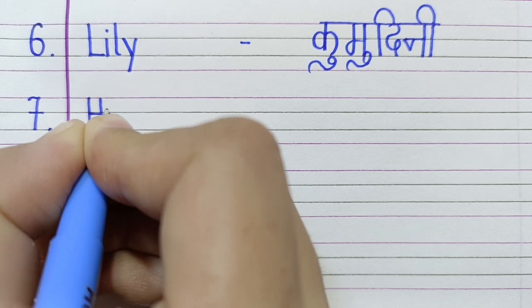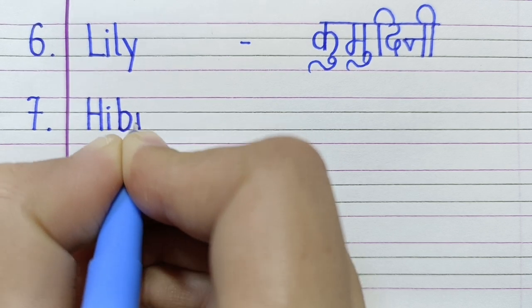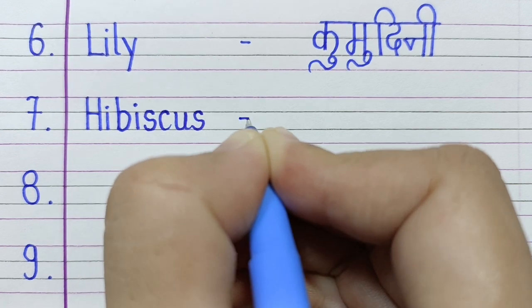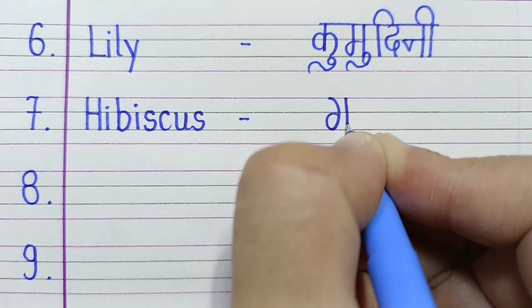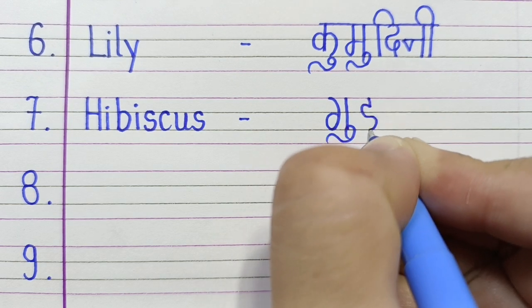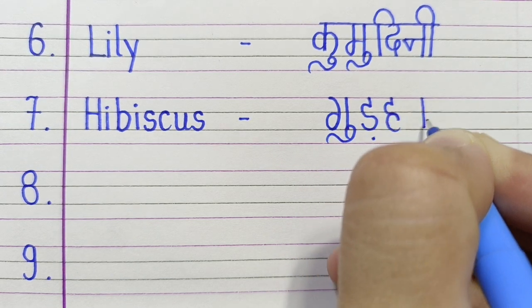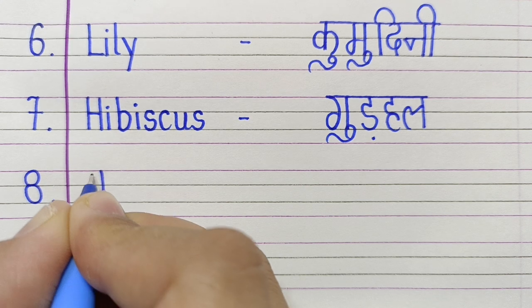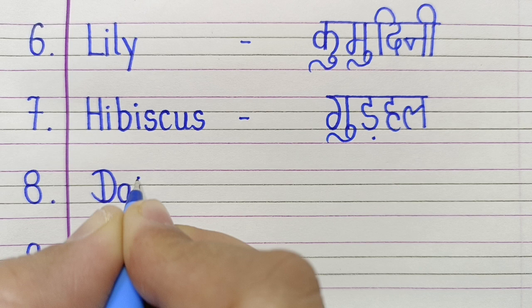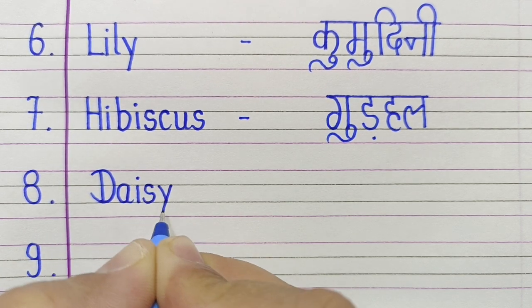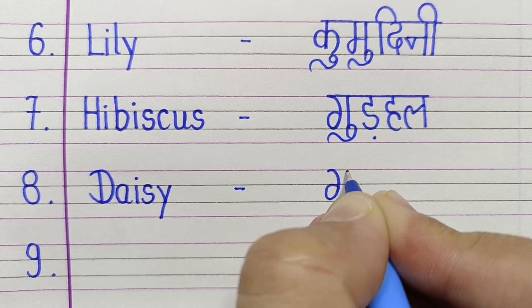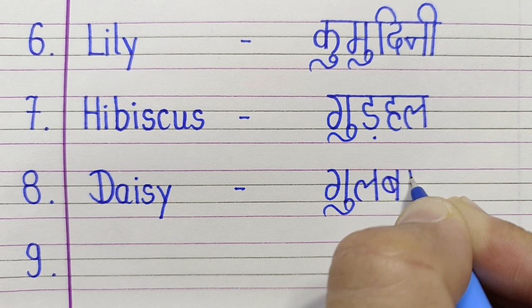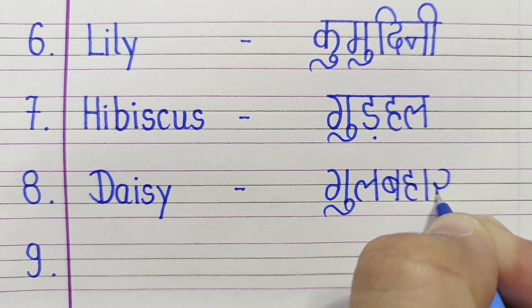H-I-B-I-S-C-U-S, Hibiscus. Daisy. Daisy means Gulbahar.